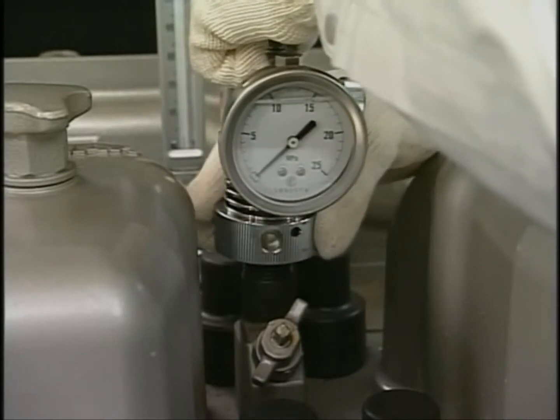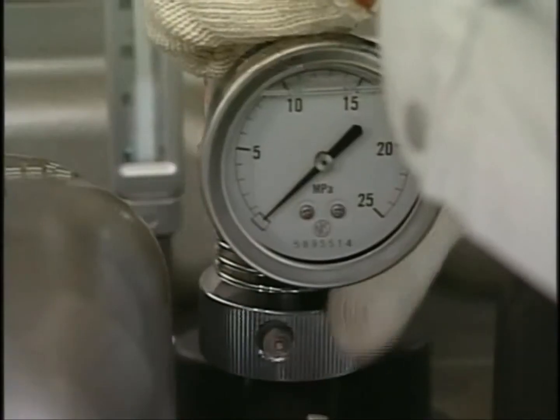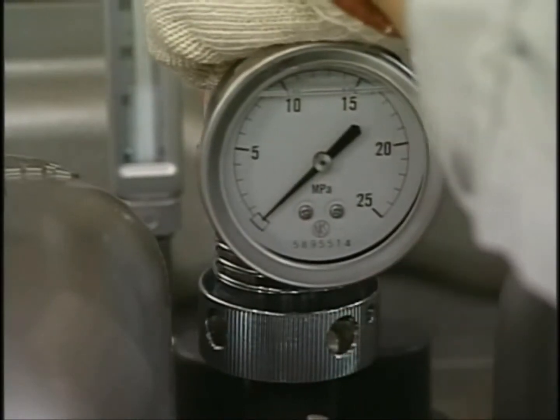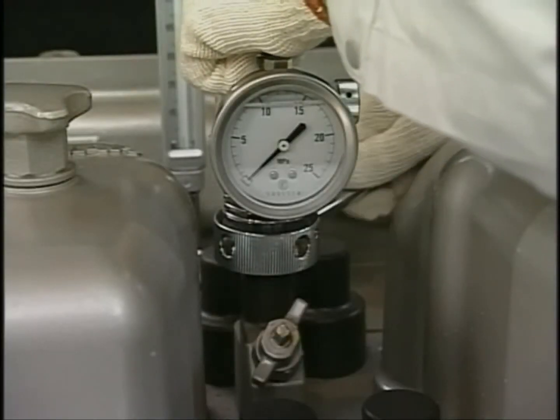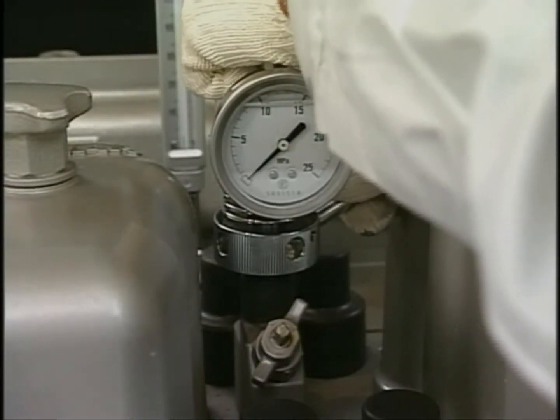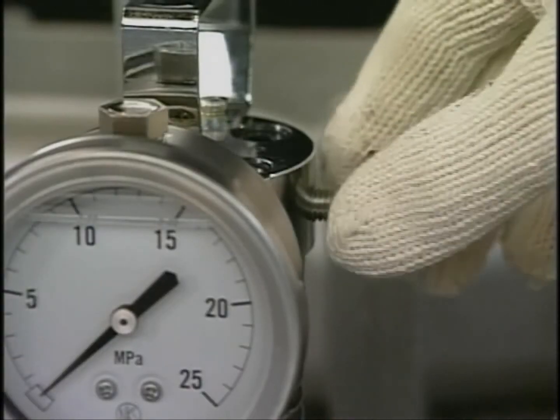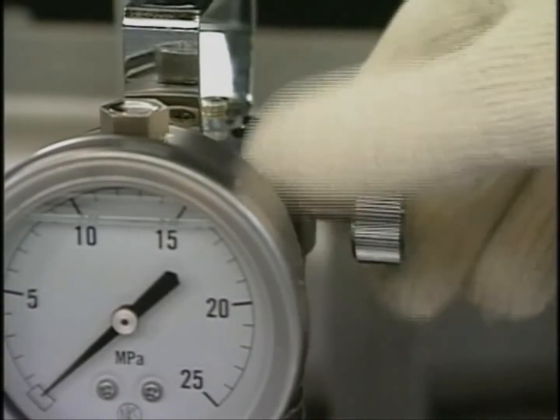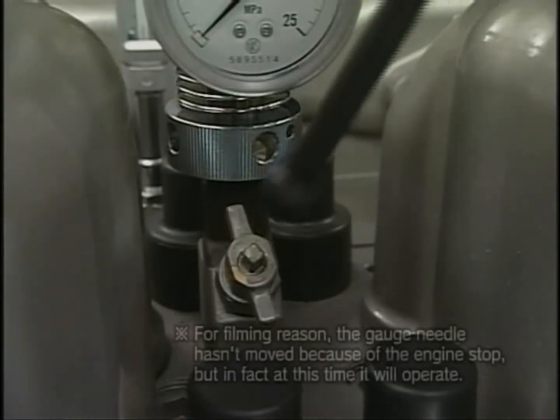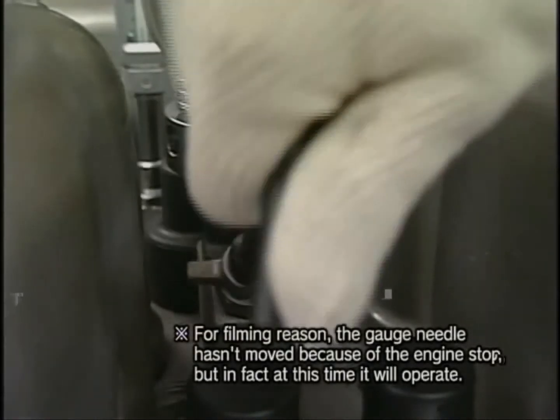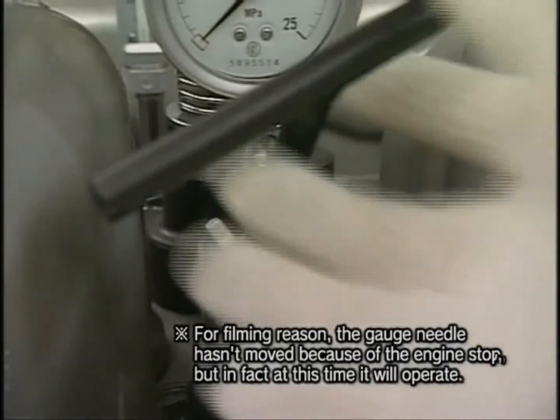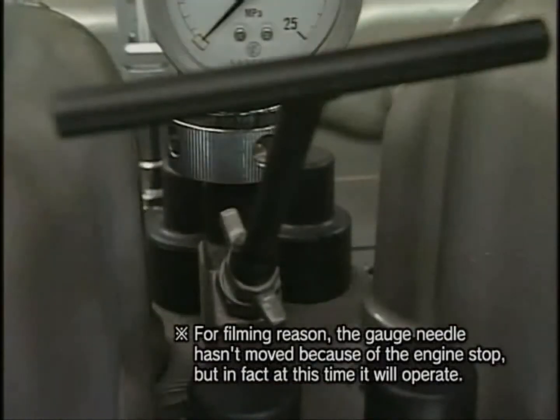Fix the indicator and close the exhaust valve of the indicator. Fully open the valve of the indicator caulk by turning the handle and close the valve when the pressure becomes highest.